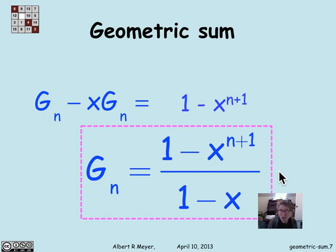We refer to this as the perturbation method. You take the sum, perturb it a little, see how it relates to itself, get an arithmetic relation, and solve for a formula for the sum.